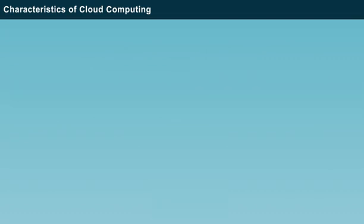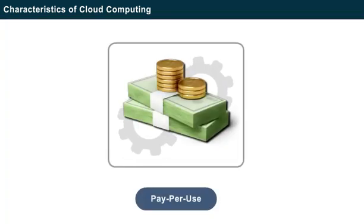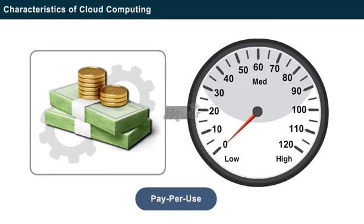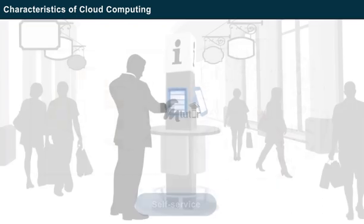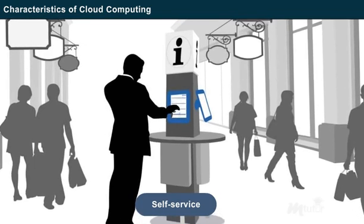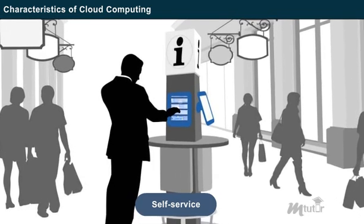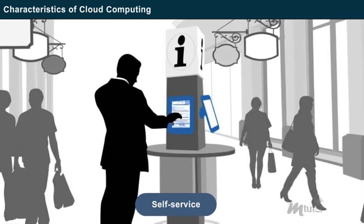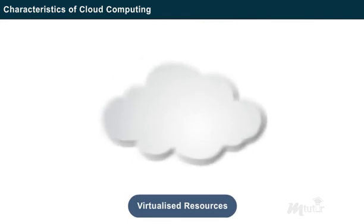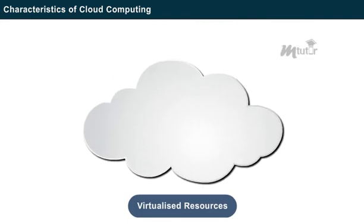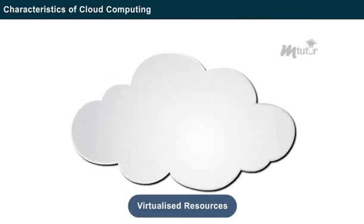Next is the pay-per-use policy — the usage of cloud service is metered and the users are charged only when they use the service. The next characteristic is the self-service interface — this service allows the cloud users to monitor the status of their resources, usage, and availability.